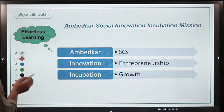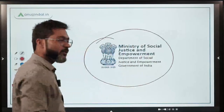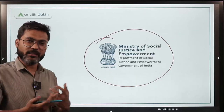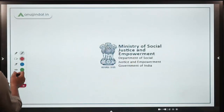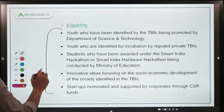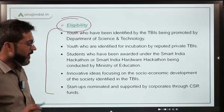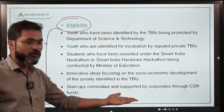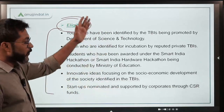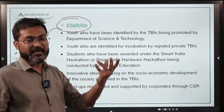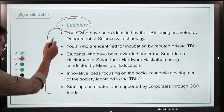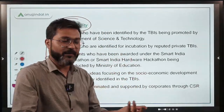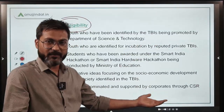Similarly, the ministry doesn't need to be memorized — if we are talking about welfare of SCs, then logically the ministry should be the Ministry of Social Justice and Empowerment. That's effortless. The eligibility criteria given in the scheme is quite technical, so they are definitely not going to ask anything from it in the exam, but you should read it once for a brief idea. These are all effortless learnings — read once, and it's fine even if you don't retain every detail.